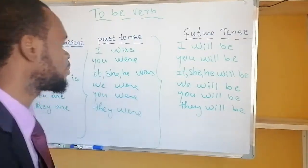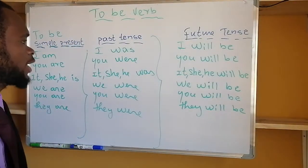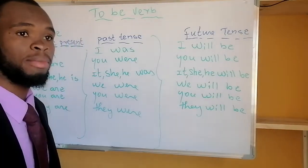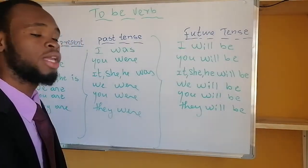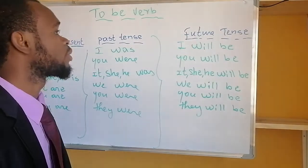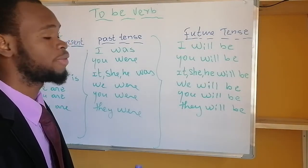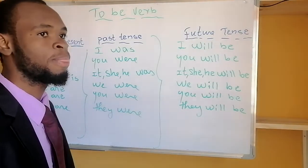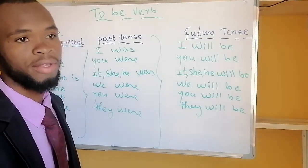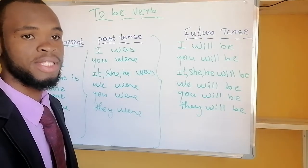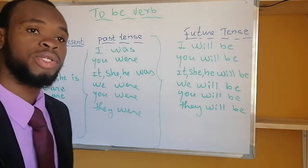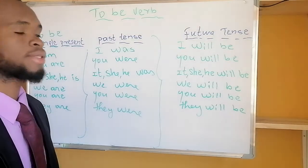Hi everybody, today we're going to be talking about the verb 'to be'. We're going to revise the lesson and we're going to cover 'to be', 'to do', 'to have'. We'll talk about the auxiliary verb and the defective verb. We'll be talking about the present, the past, and the future of the verb 'to be'.